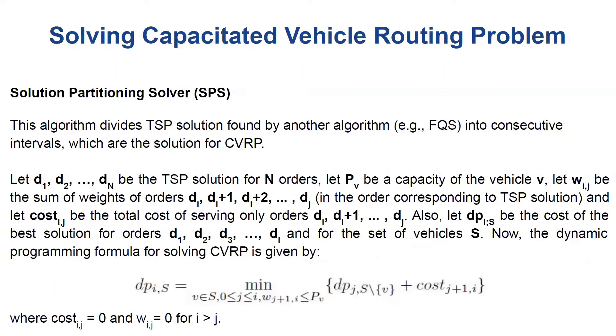The last and most advanced algorithm is called Solution Partitioning Solver. This algorithm divides traveling salesman problem solutions found by another algorithm, for example full QUBO solver, into consecutive intervals, which are the solution for CVRP. So we can assume that each interval is visited by a single vehicle.